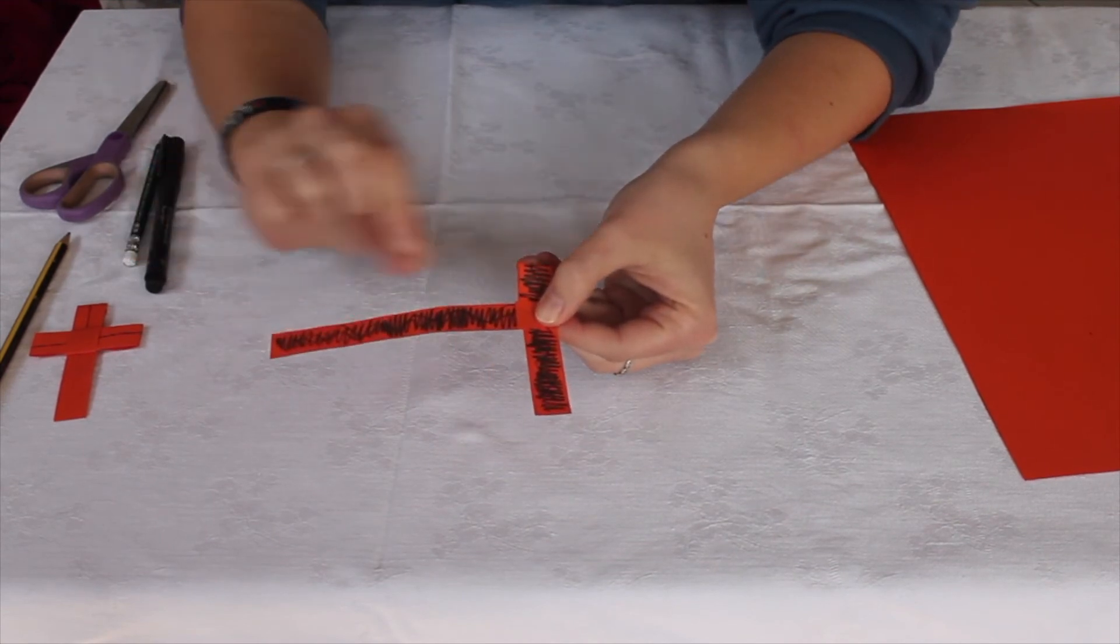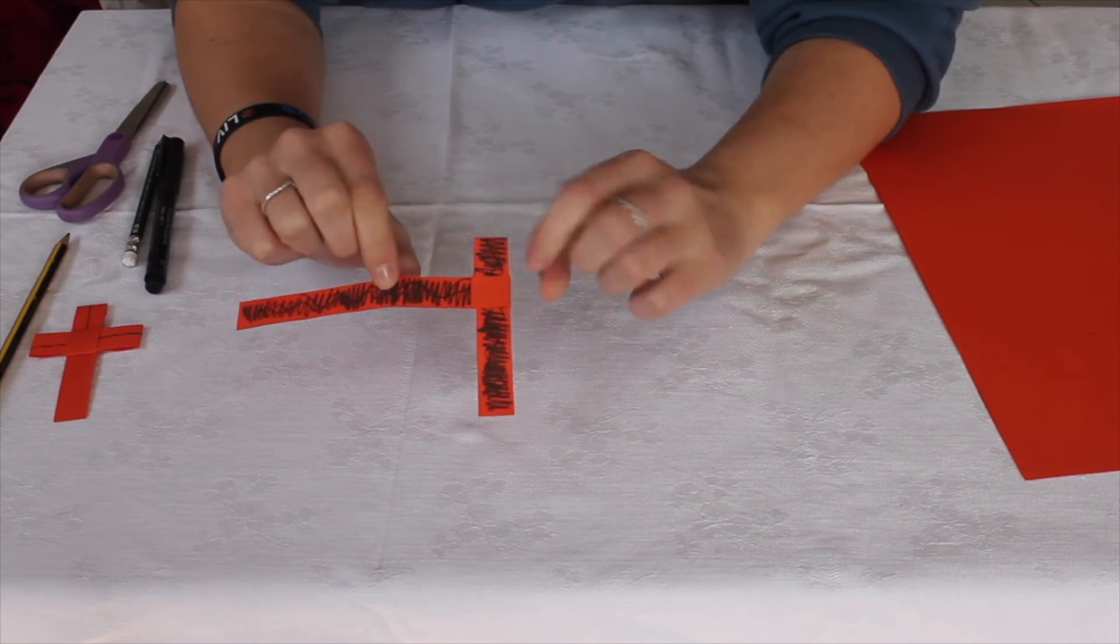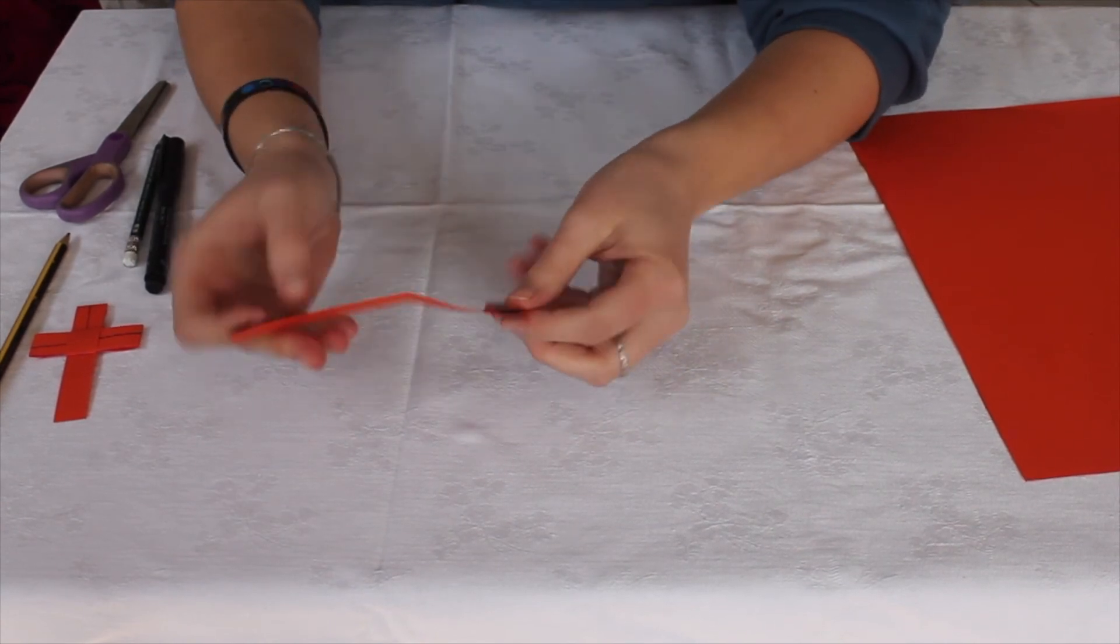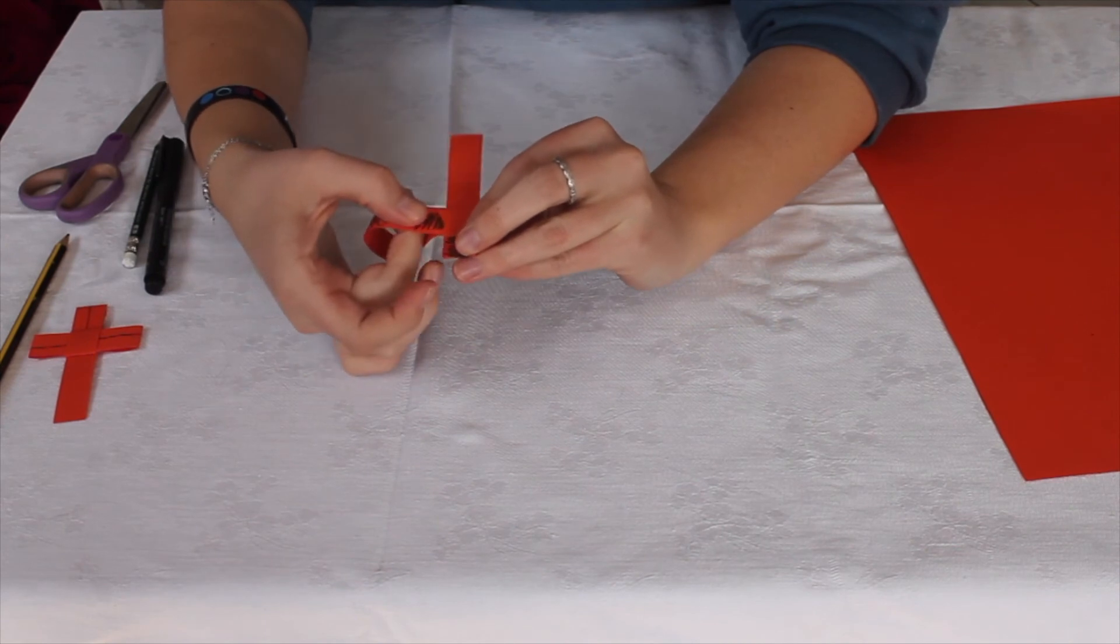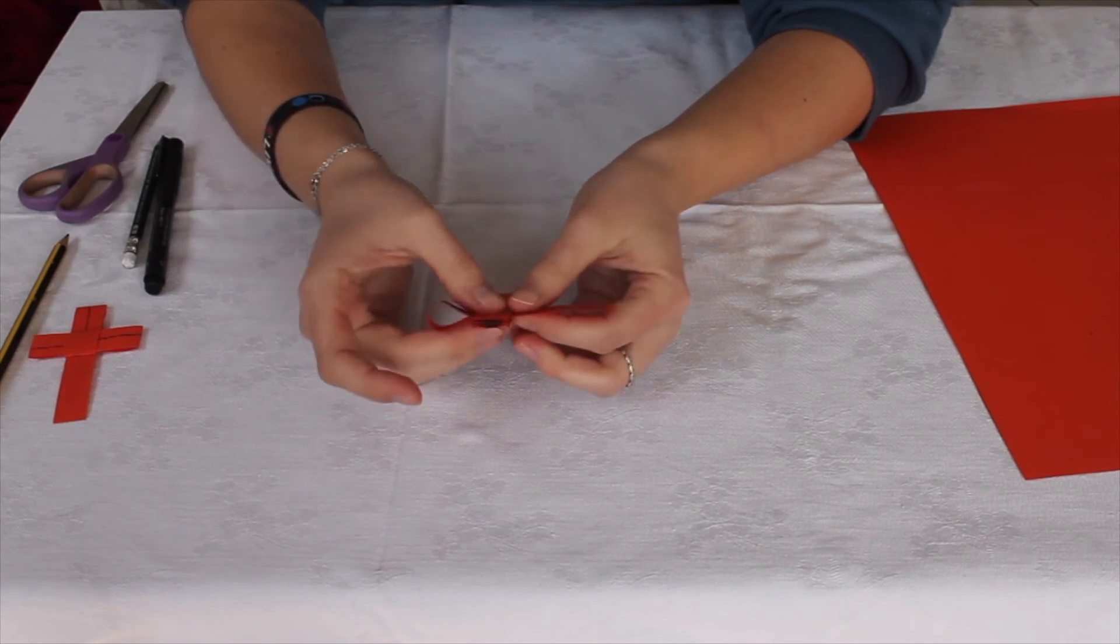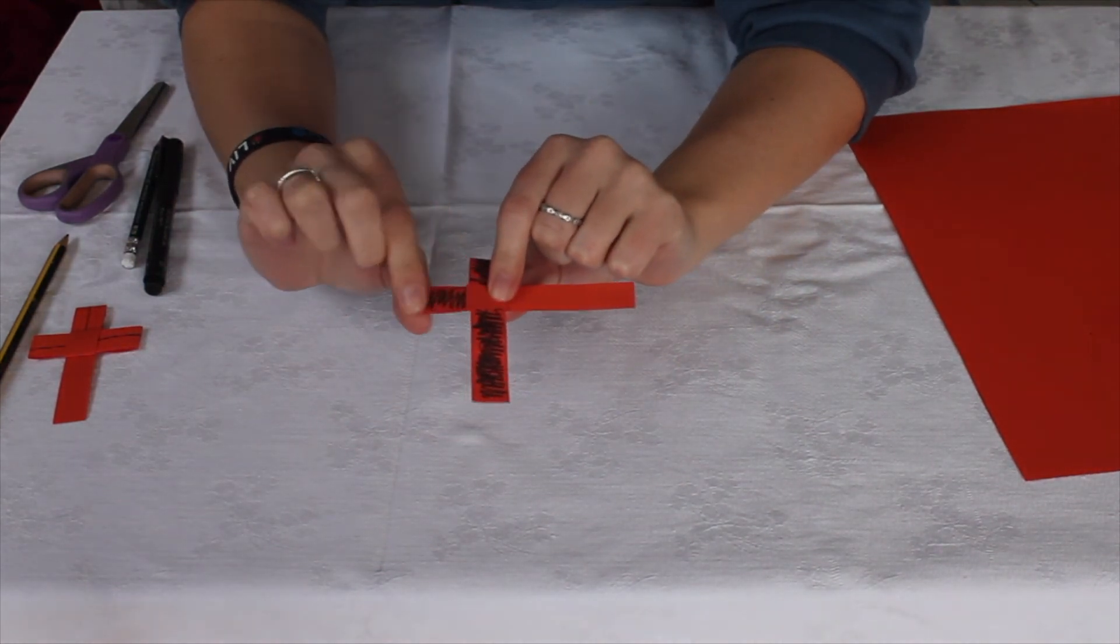Now we're going to take this longer strip here and this is going to make the horizontal bit of the cross. So fold it back through the pocket like so and you might just want to give that a pinch so it stays in place.